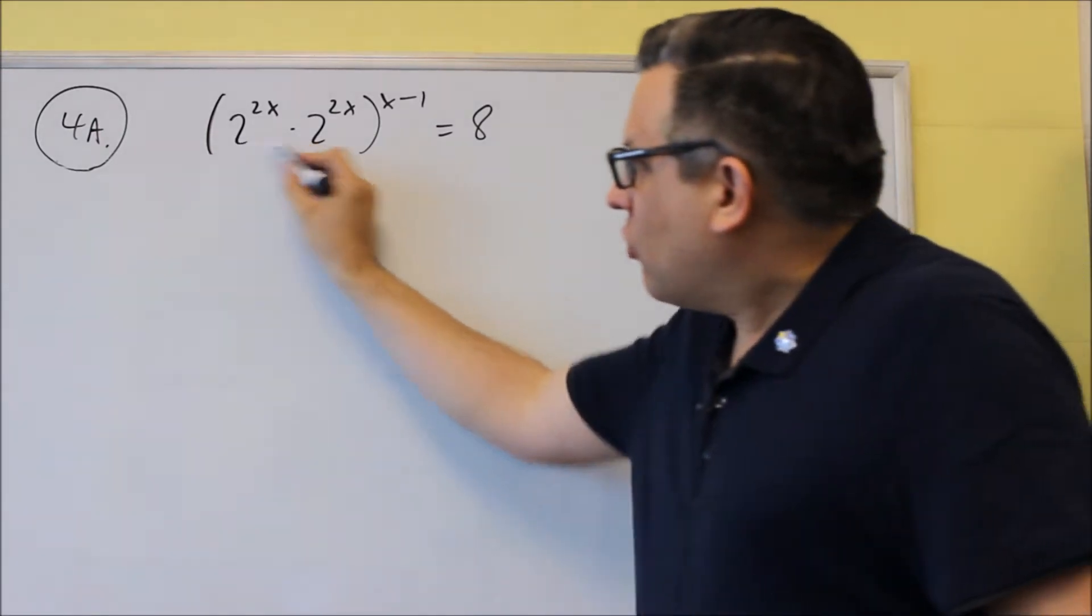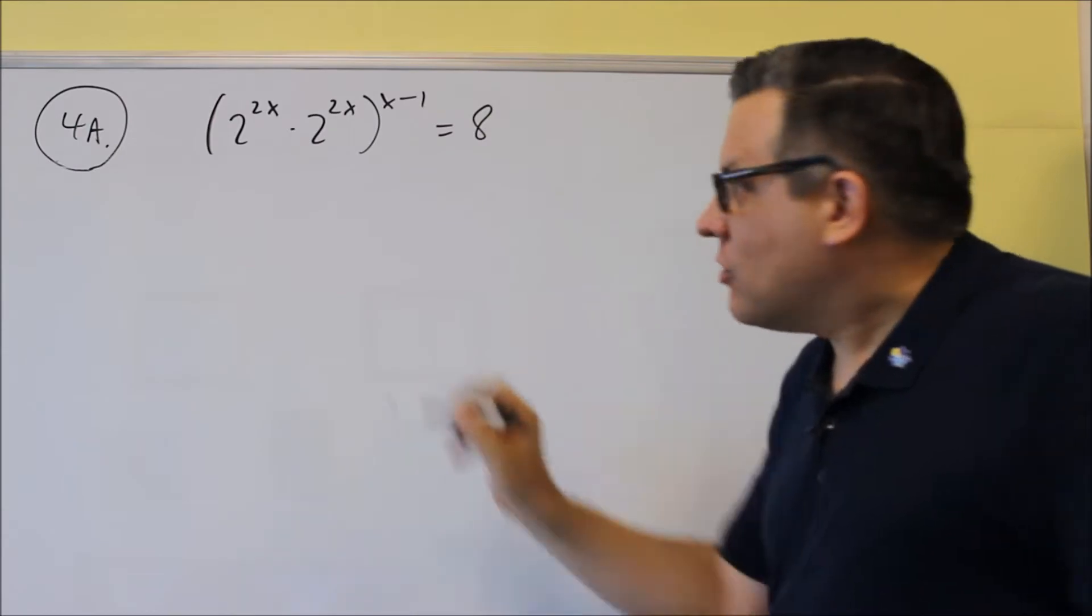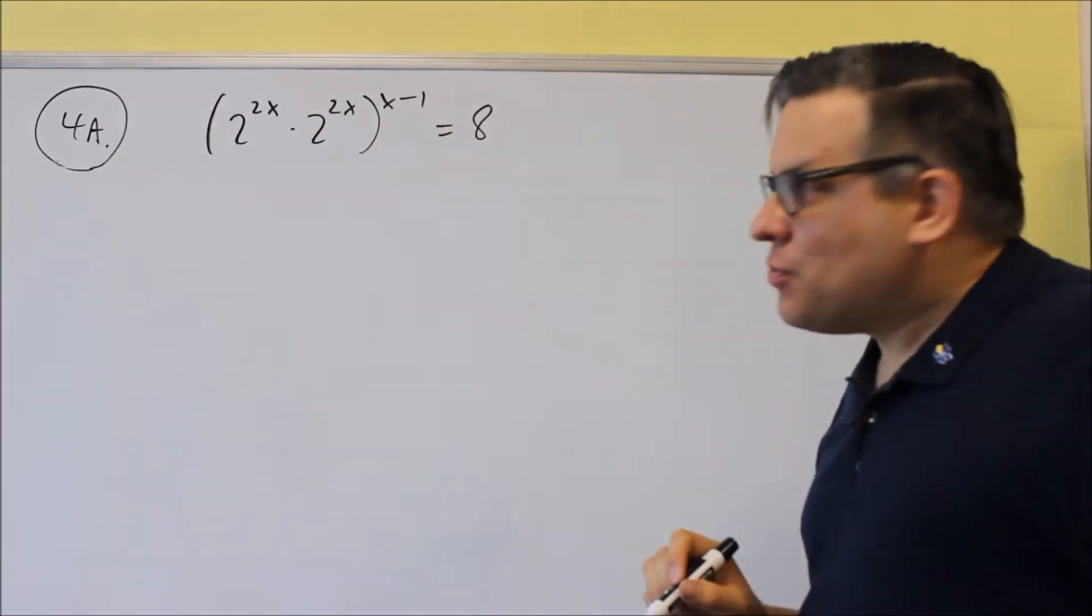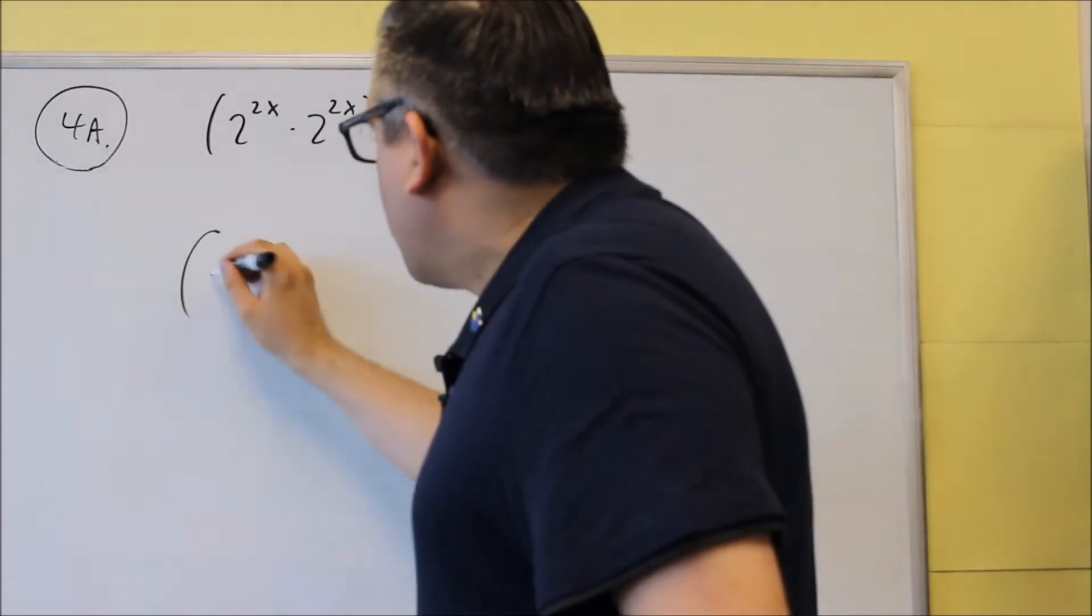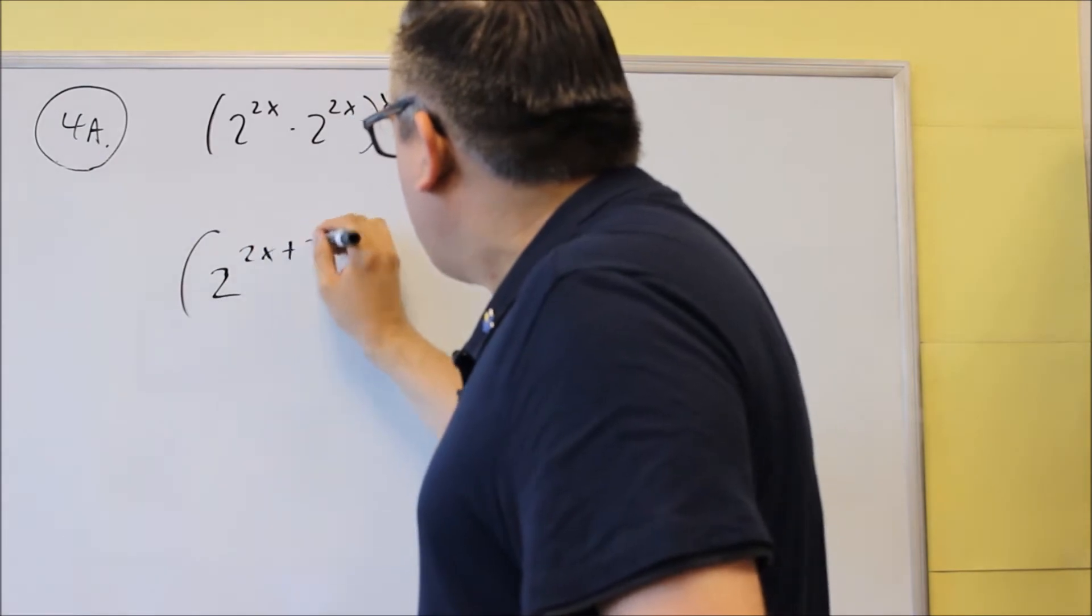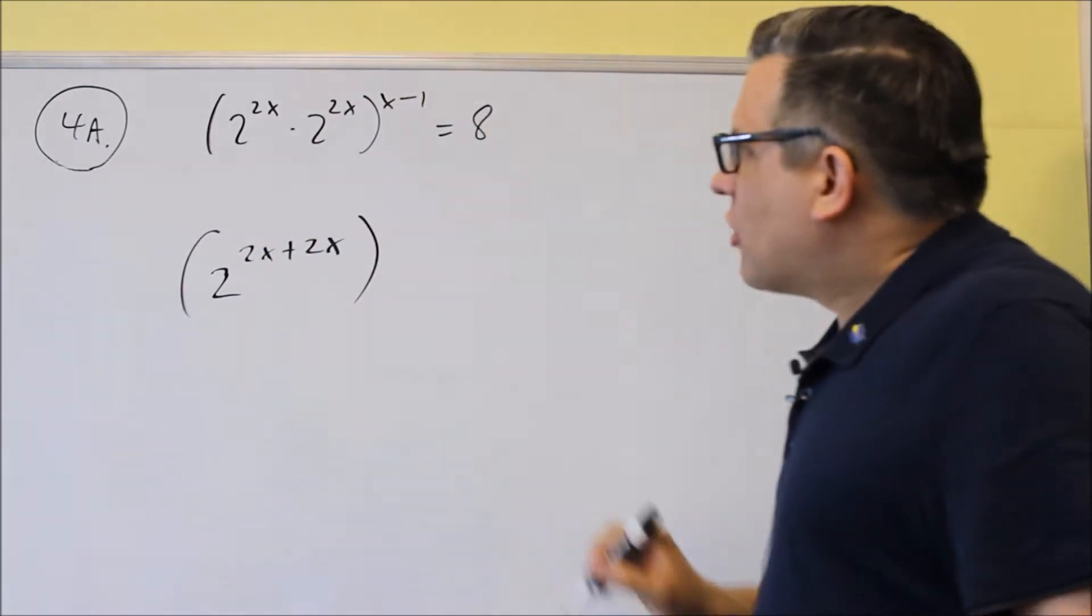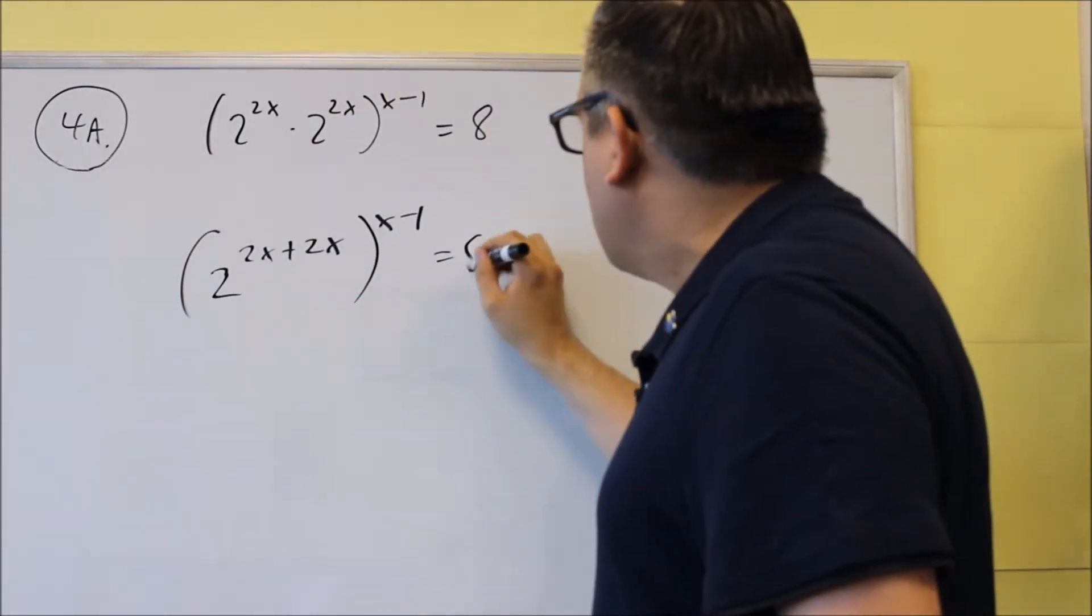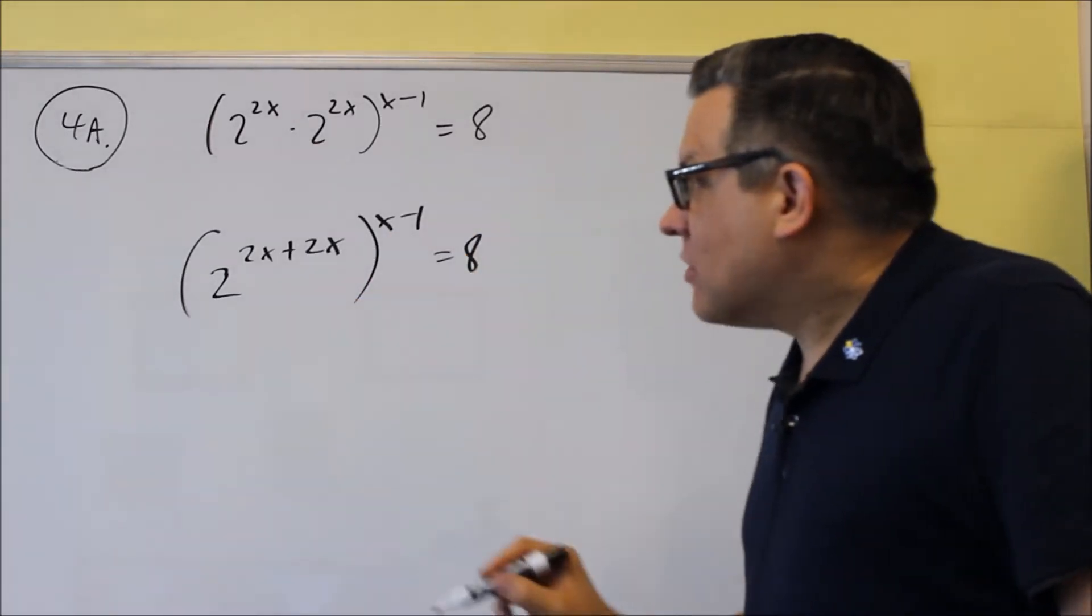Now we're multiplying two things that have the same base, so when that happens, you're going to add the exponents together. So what that'll look like is 2 to the 2x plus 2x. We can take that all together and make it one base.